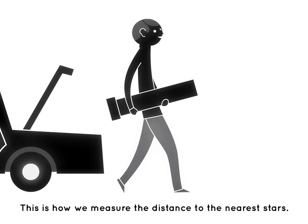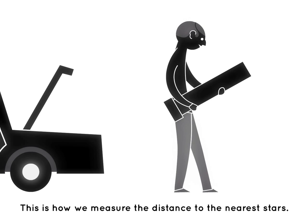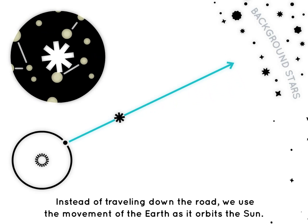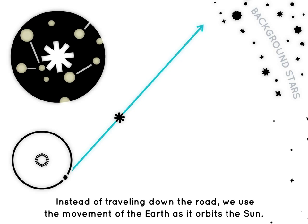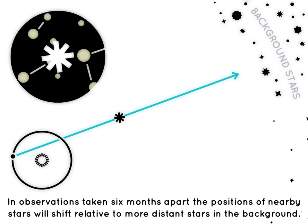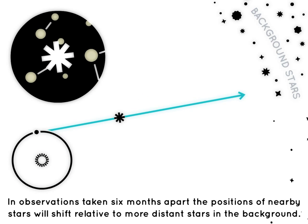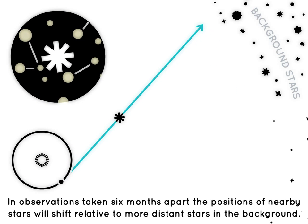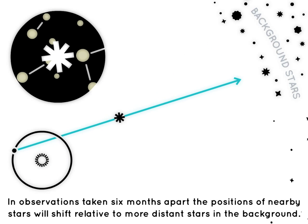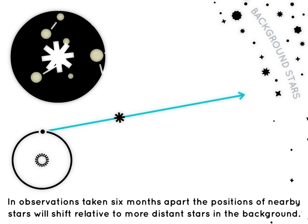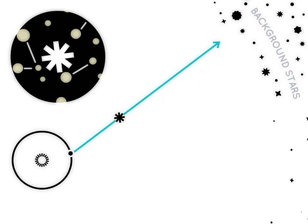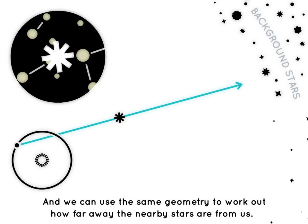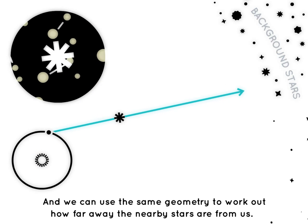This is how we measure the distance to the nearest stars. Instead of traveling down the road, we use the movement of the Earth as it orbits the Sun. In observations taken six months apart, the positions of nearby stars will shift relative to more distant stars in the background, and we can use the same geometry to work out how far away the nearby stars are from us.